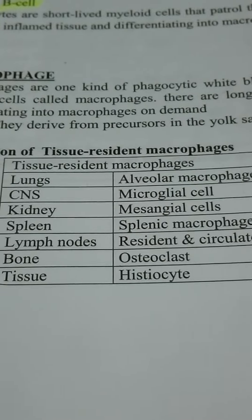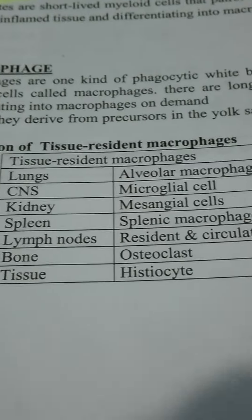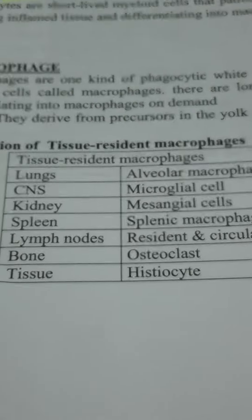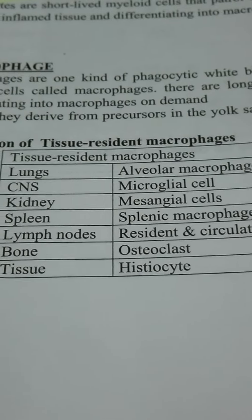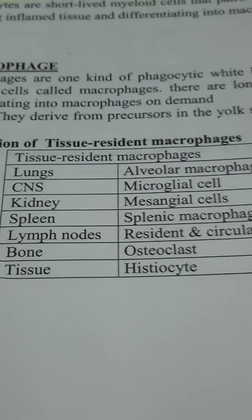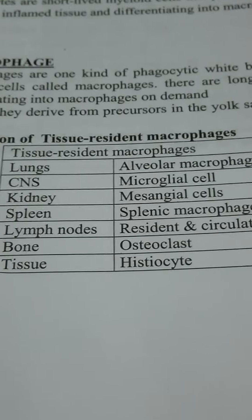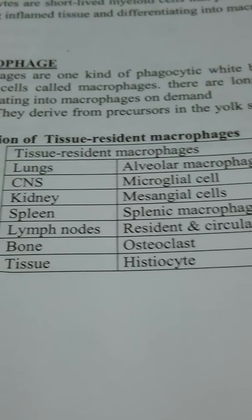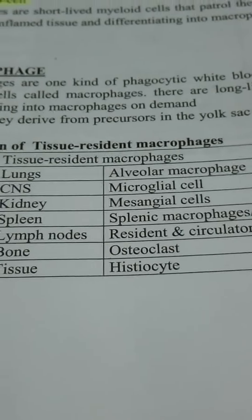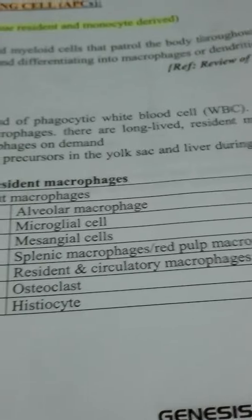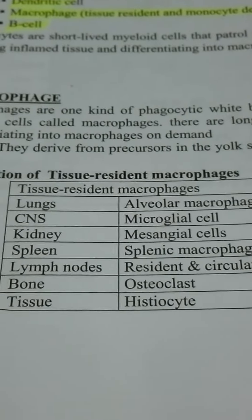Today I'll talk about tissue-resident macrophages. In the lungs, it is known as alveolar macrophage. In the central nervous system, it is the microglial cell. In the kidney, it is the mesangial cell. In the spleen, it is the splenic macrophage or red pulp macrophage. In lymph nodes, it is the resident or circulatory macrophage. In bones, it is the osteoclast.